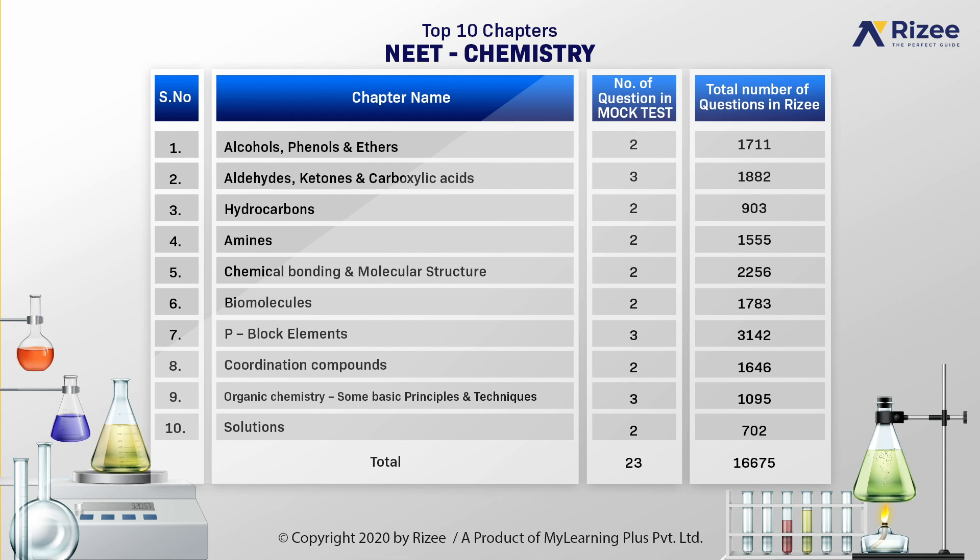The number of questions given in our mock test from these 10 important Chemistry chapters are 23 out of 45. The chapters are: Alcohols, Phenols and Ethers — 2 questions; Aldehydes, Ketones and Carboxylic Acids — 3 questions; Hydrocarbons — 2 questions; Amines — 2 questions.